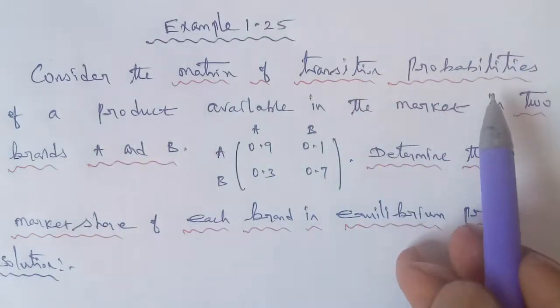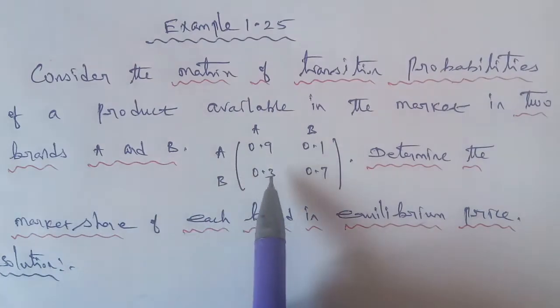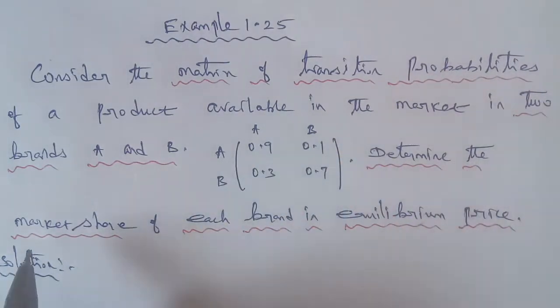Consider the matrix of transition probabilities of a product available in the market in two brands A and B. You will have a two row two column matrix given in the question and determine the market share of each brand in equilibrium price.